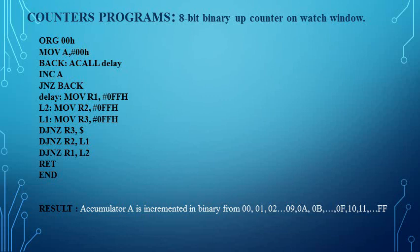Now we write the code for the delay subroutine. The delay is implemented by loading some value into registers and decrementing until they become zero. Here we load R1 with FFh, R2 with FFh, and R3 with FFh. After that, we use the instruction DJNZ R3, dollar — we keep decrementing R3 until it becomes zero.